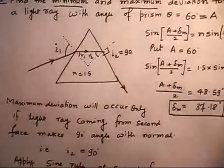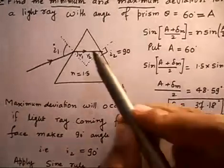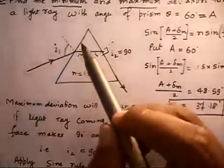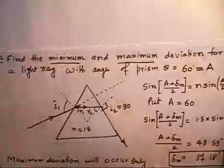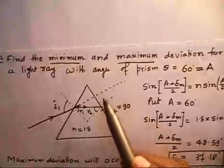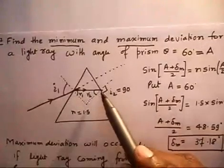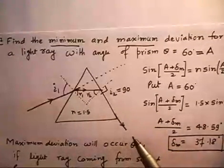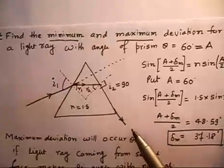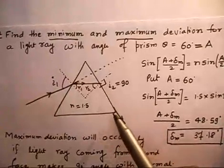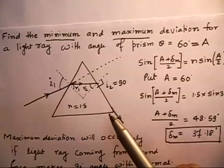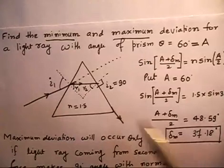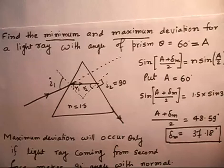Now let us find the maximum deviation. Maximum deviation of this ray — the ray will go something like this, following a certain path. I want maximum deviation. This is possible only if the refracted ray goes along the surface. We are talking only about refracted rays and what is the angle of deviation for them.